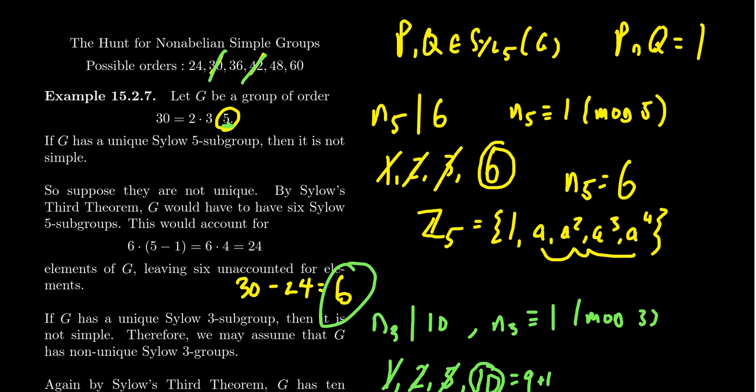So 30 and 42 are off our list, and we'll consider the remaining ones in our next video.